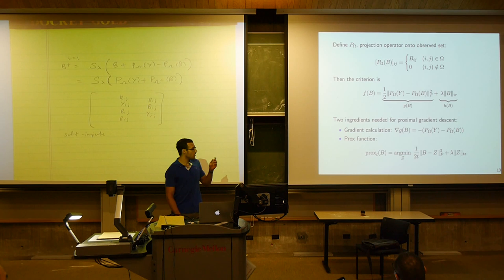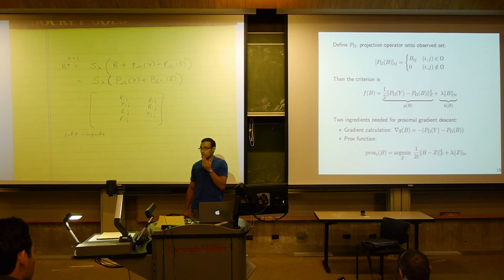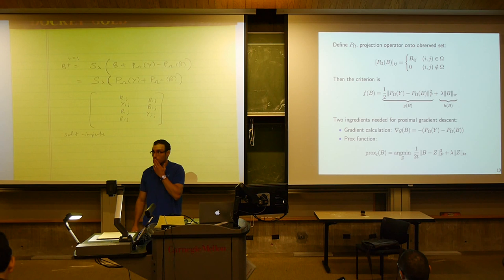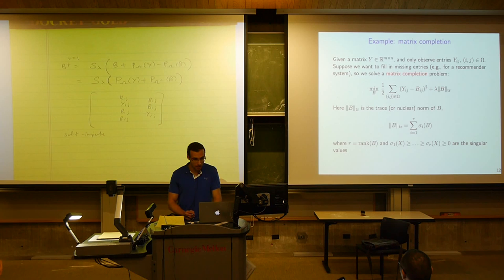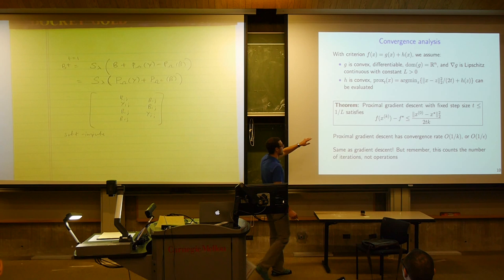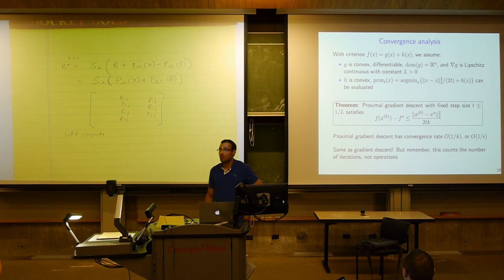Soft impute is exactly proximal gradient with t equals 1. It has all the convergence properties we already know about proximal gradient, and it's pretty simple and effective for matrix completion. Regarding the step size: we proved that the step size can be as large as one over the Lipschitz constant, and since L=1 here, t=1 is the largest step size that guarantees convergence — which is a nice feature of this problem.